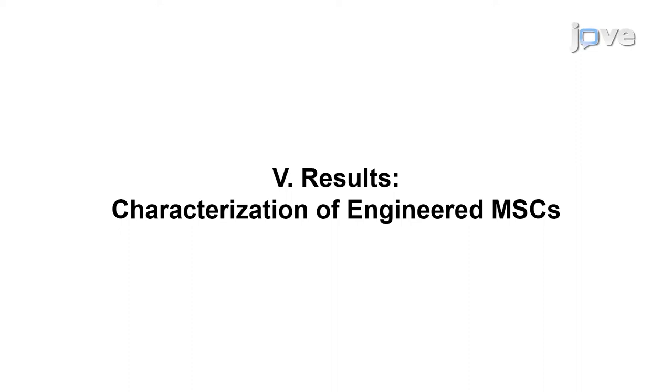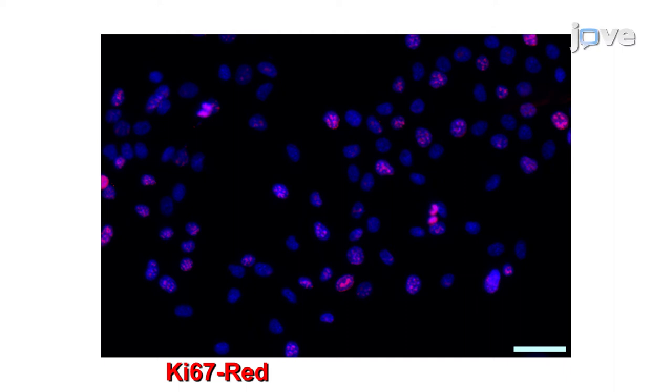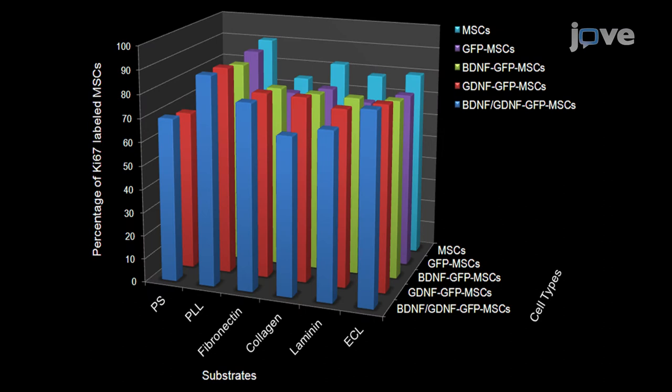As shown here, five different populations of MSC subtypes were plated into 96-well tissue culture plates pre-coated with different substrates. In this figure, anti-KI-67, which identifies proliferating cells, and DAPI was used to evaluate whether the different substrates influenced proliferation of the different populations of engineered MSCs. As illustrated here, although there was variation in the percentages of proliferating MSCs, all substrates supported considerable cell proliferation for each MSC subtype.